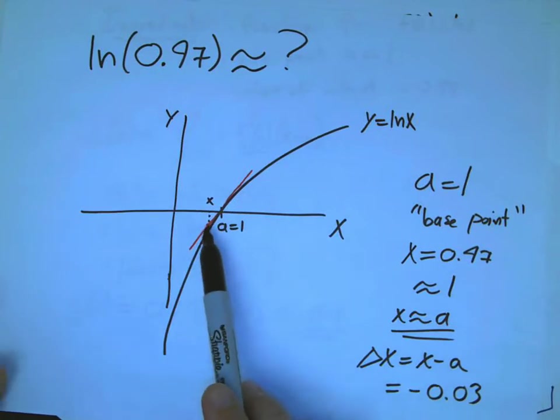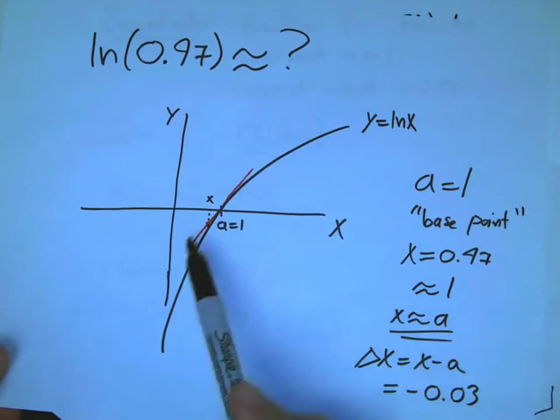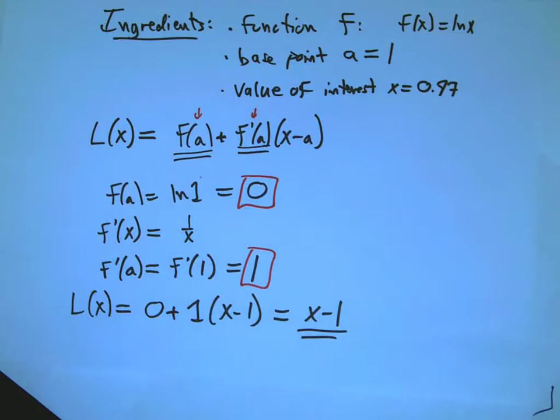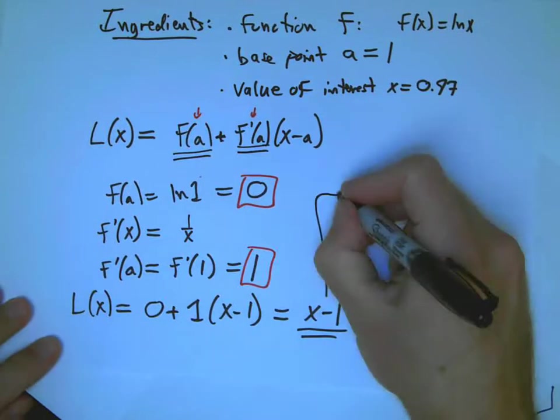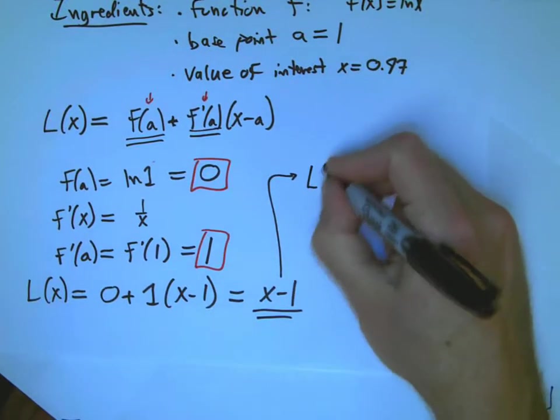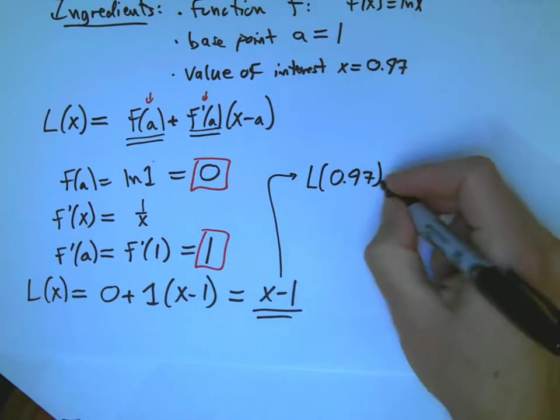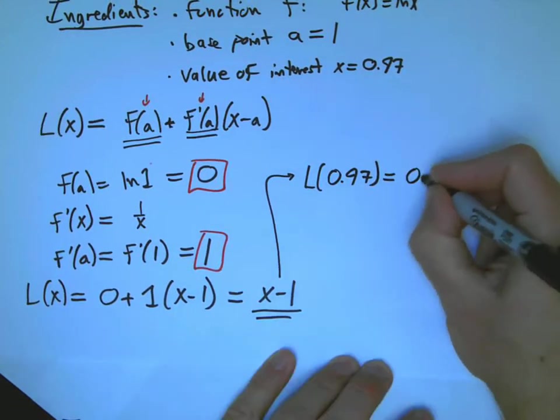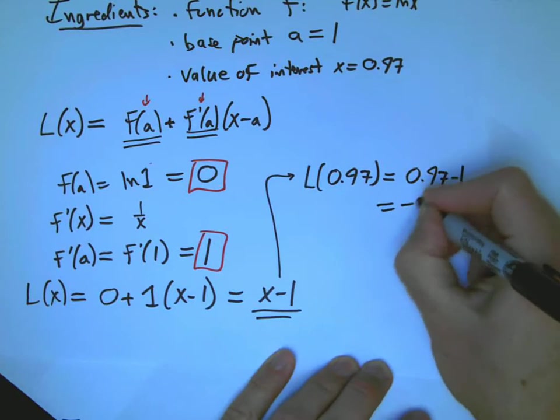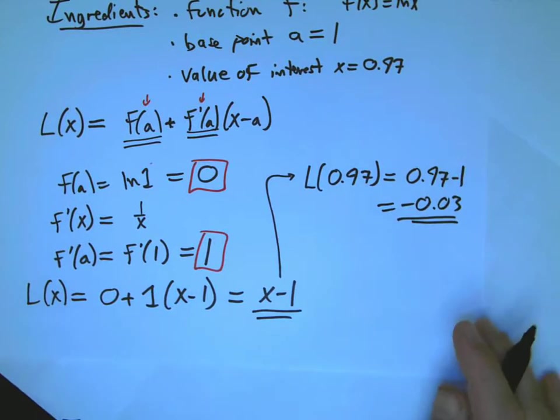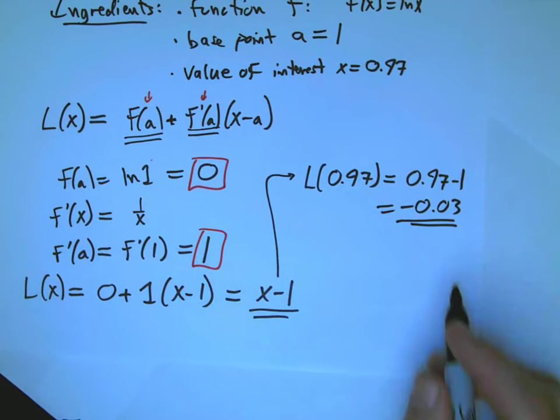And then, we just stick in our x value that we really care about into that function, and we'll get an approximate version. I'll save paper, put it over here. So, L of our approximate value, that goes in here, equals 0.97 minus 1, minus 0.03.